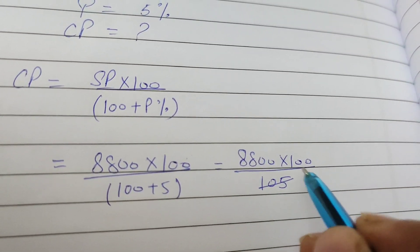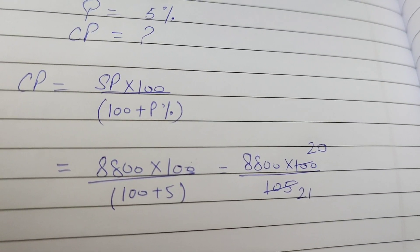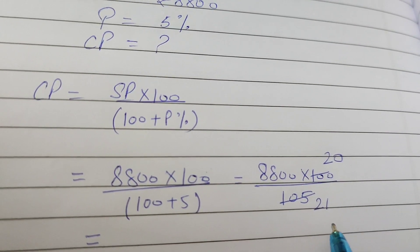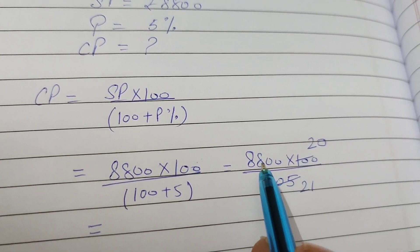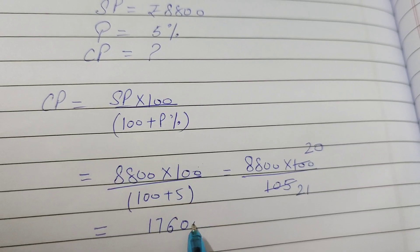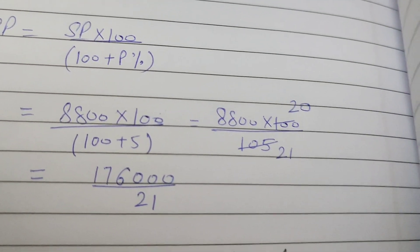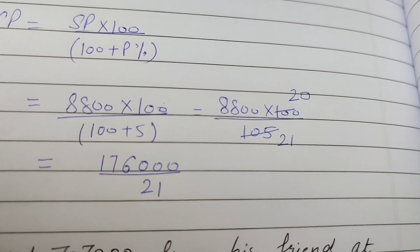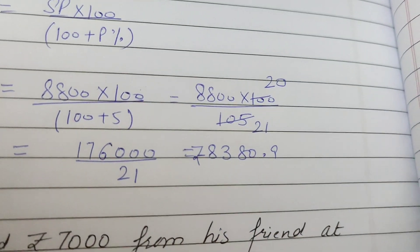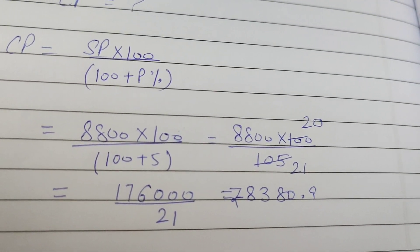Ab iski calculations karate hain. Cancellation ki jiye. 5 twos are 10, 5 ones are 5, 5 twos are 10, 5 zeros are 0. Ab 21 ke table se cancel out karenge. Multiply karate hain numerators ko. We will get 1, 7, 6, 1, 2, 3 zeros divided by 21. 21 se divide karne pe we will get 8,380.90 rupees. So 8,380 rupees and 90 paisa.